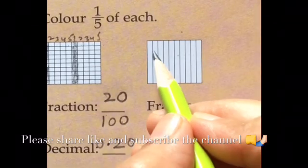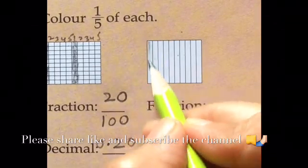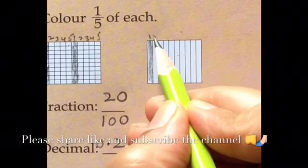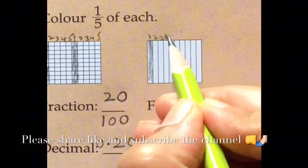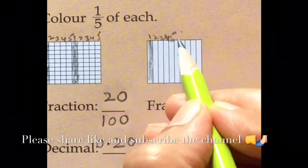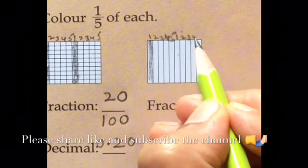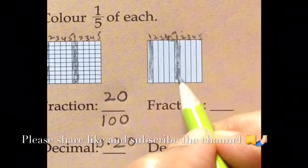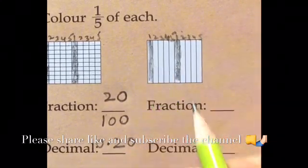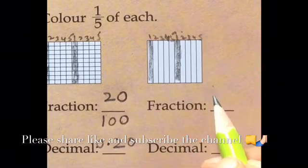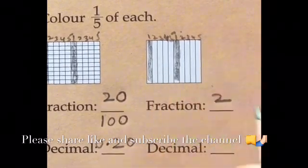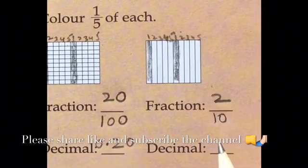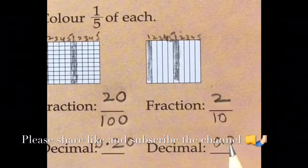Now for in this second one, so I will colour 1 out of 5. So 1, 2, 3, 4 and 5 I have coloured 1. So how many lines I have coloured? 2. How many total lines are there? 10. So the fraction for this will be 0.2.